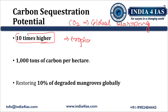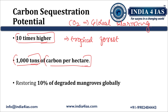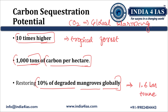Compared to tropical forests, mangroves sequester carbon 10 times more. Blue carbon ecosystems have the capacity to sequester 1,000 tons of carbon per hectare. Additionally, restoration of just 10 percent of degraded mangroves worldwide can sequester an additional 1.6 billion tons of CO2. That is the carbon sequestration potential of blue carbon ecosystems, which is why they are vital in fighting climate change and global warming.